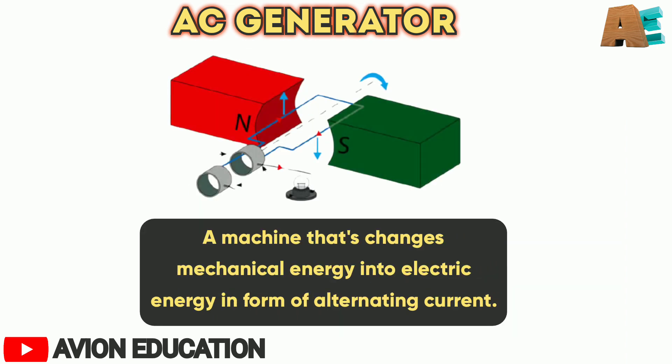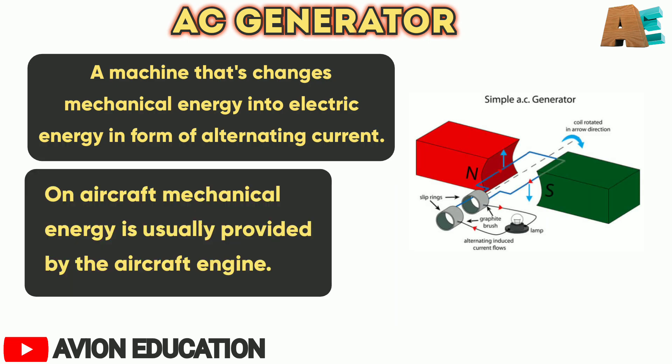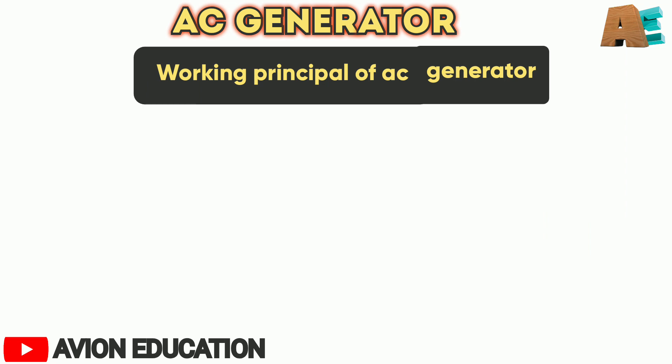An AC generator can be defined as a machine that converts mechanical energy into electrical energy in the form of alternating current. On aircraft, the mechanical energy supplied to the generators is usually provided by the aircraft engines.